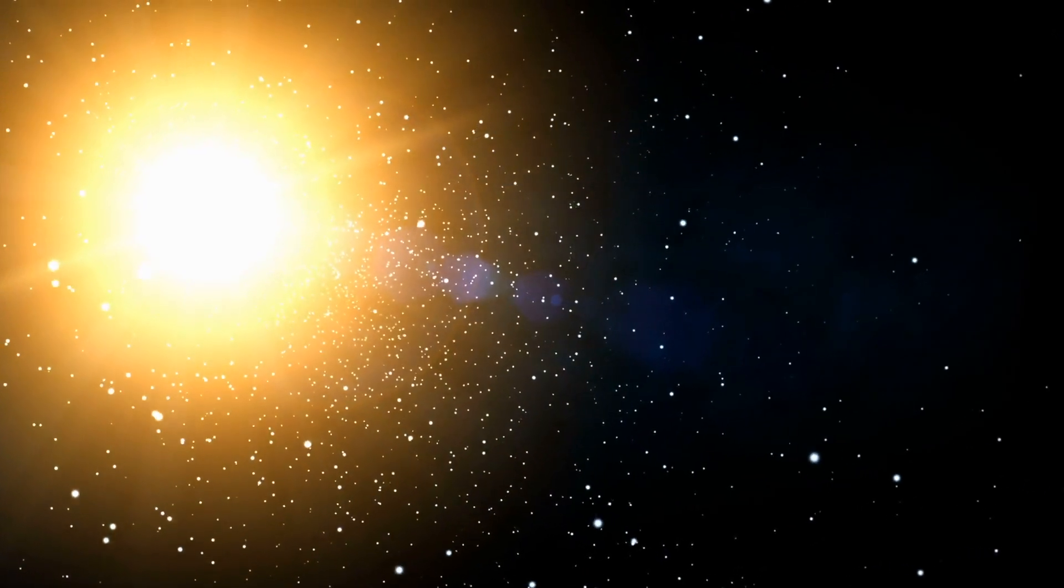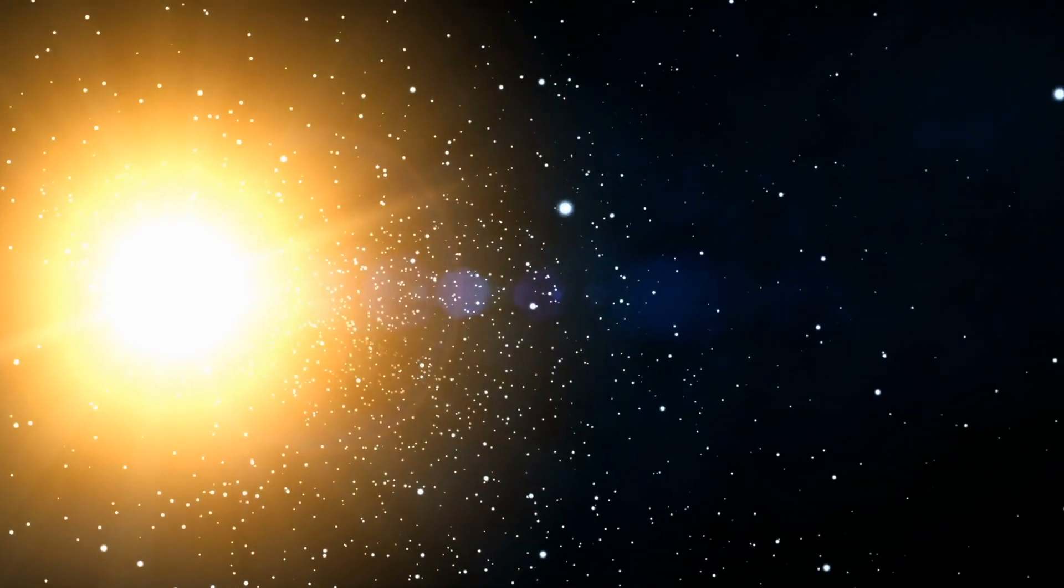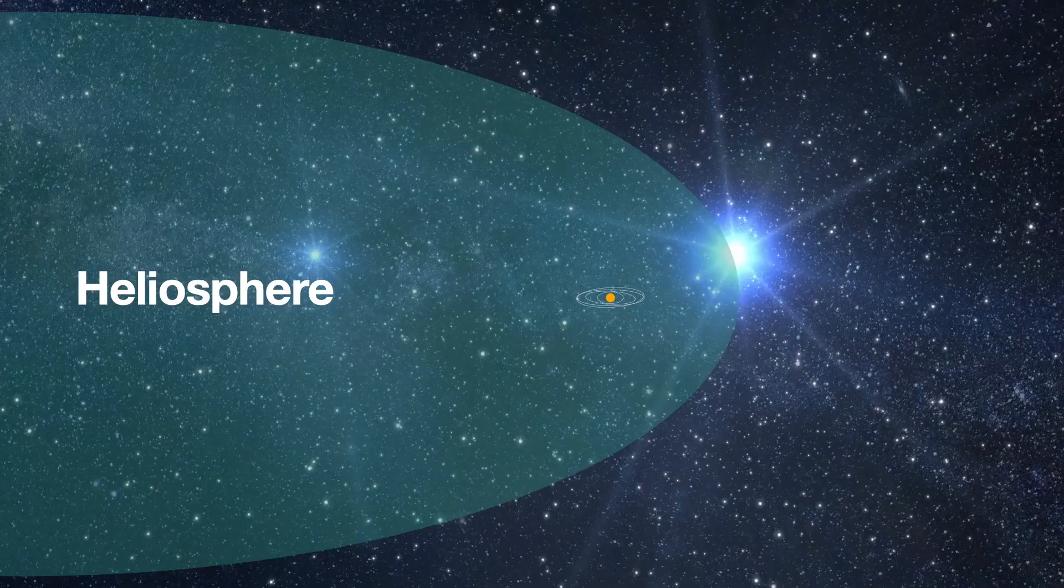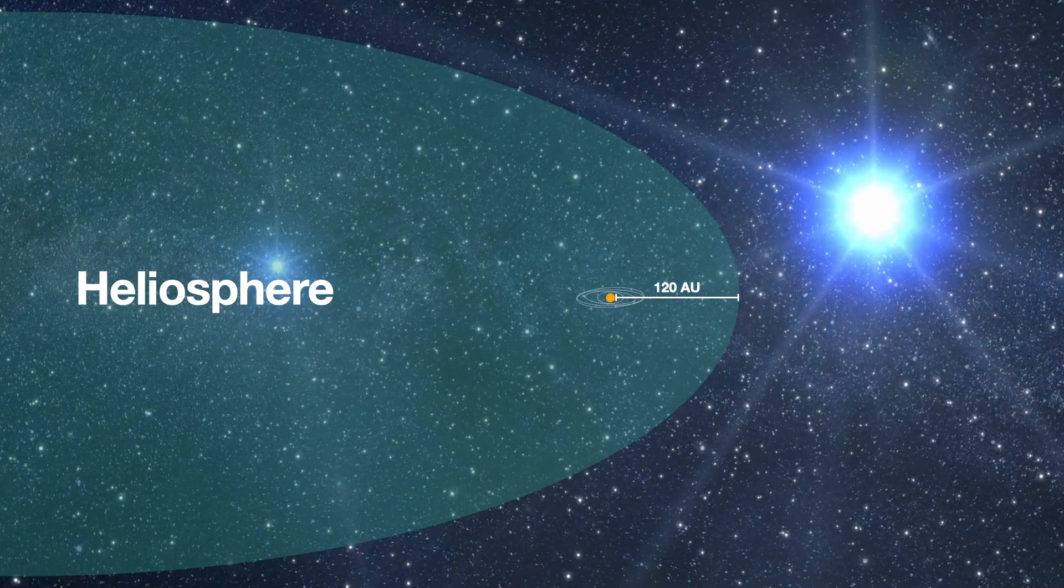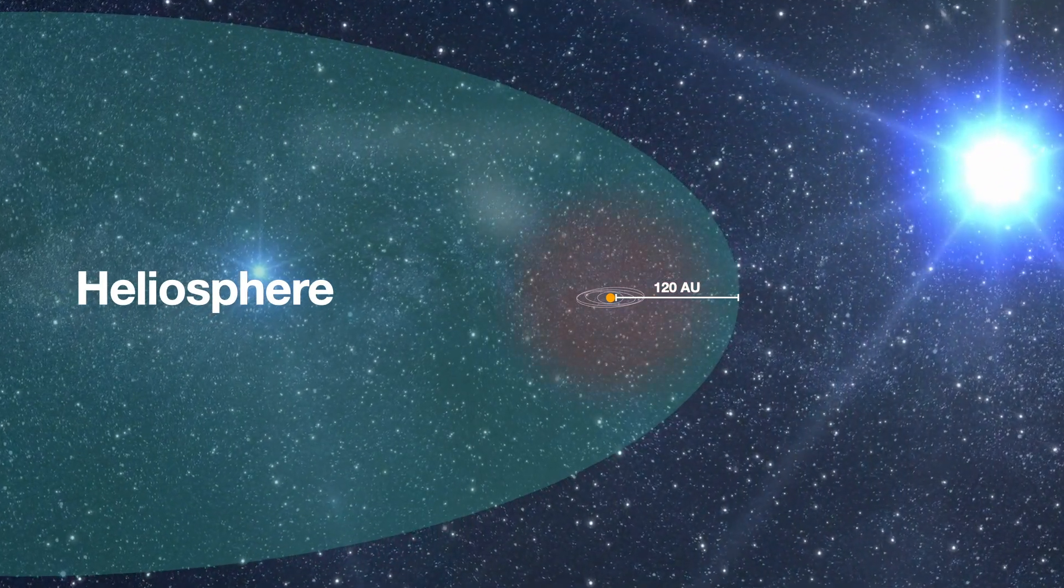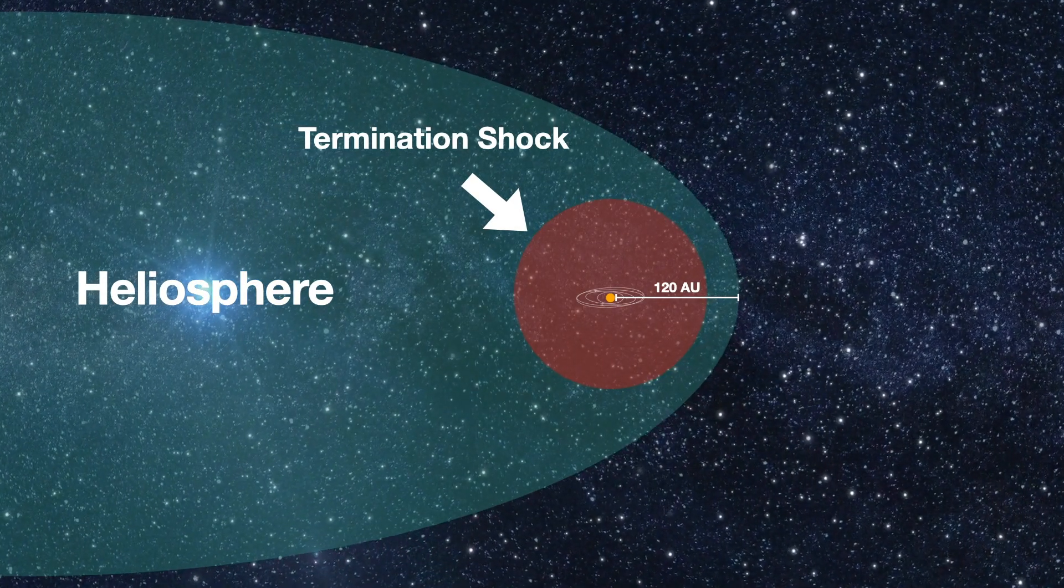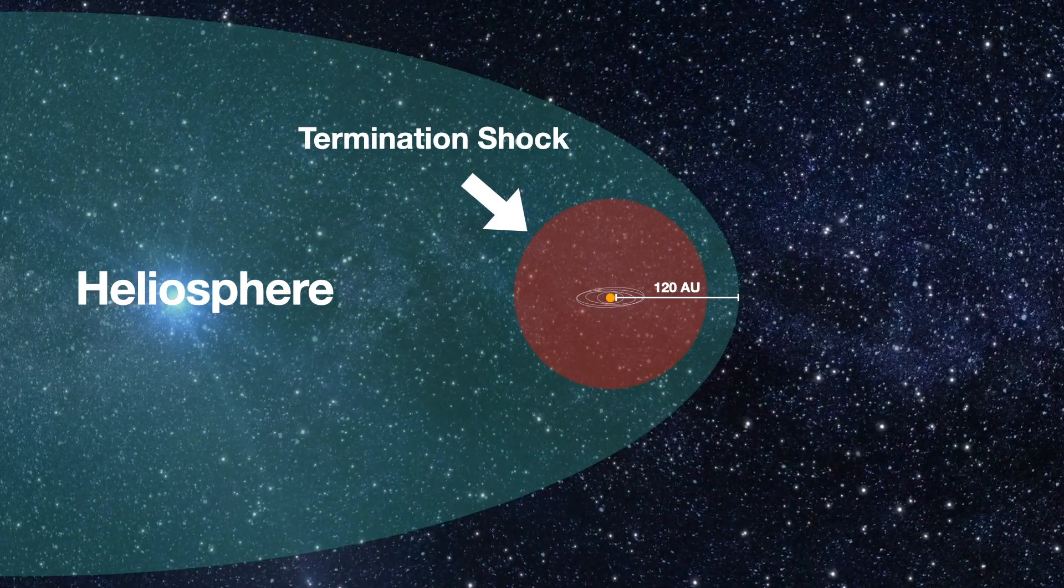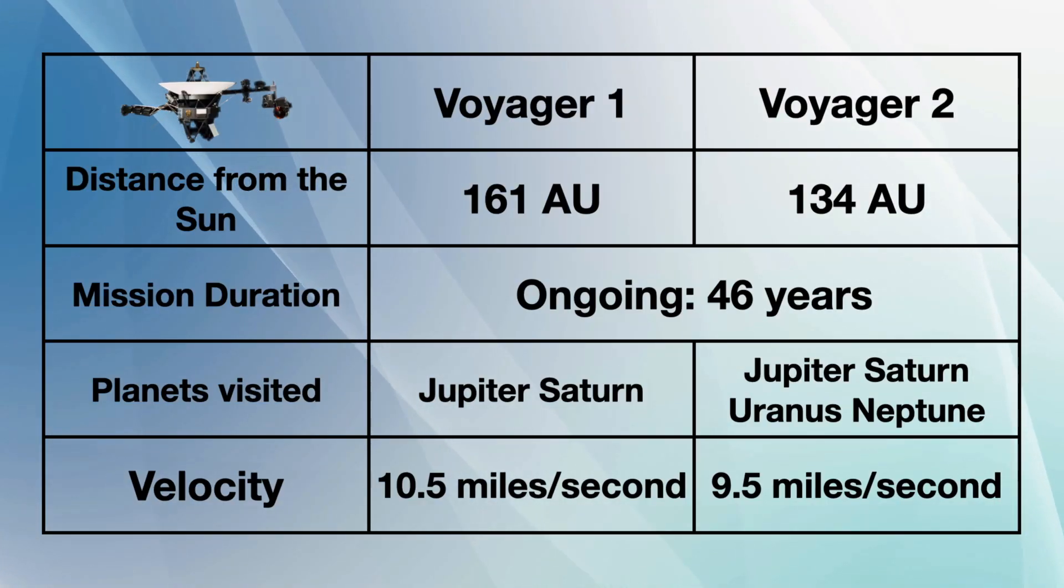Interstellar space begins at the end of the heliosphere, which is the region dominated by plasma emitted from the Sun called solar wind. The border of the heliosphere is called heliopause and is estimated to be at 120 AU from the Sun. Before heliopause is a boundary called termination shock between 75 and 95 AU, where the solar wind's intensity begins to decrease significantly. Voyager 1 and 2 are still functioning and have traversed into interstellar space after crossing heliopause in 2012 and 2018 respectively.